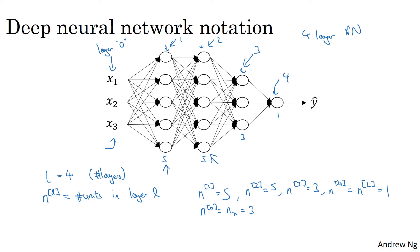So that's the notation we'll use to describe the number of nodes we have in different layers. For each layer L, we're also going to use A^L to denote the activations in layer L. So we'll see later that in forward propagation, you end up computing A^L as the activation G applied to Z^L, and perhaps the activation is indexed by the layer L as well. And then we'll use W^L to denote the weights for computing the values Z^L in layer L, and similarly B^L is used to compute Z^L.